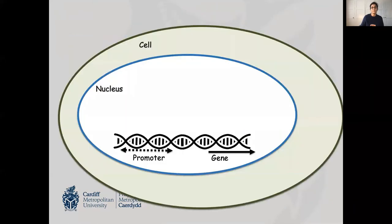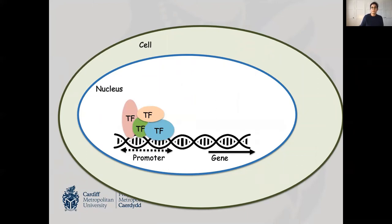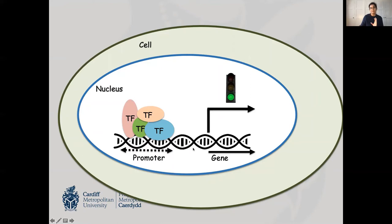When I talk about gene expression, what do I mean? This is our gene, shown with a solid arrow — this is where the information is to make protein. But to make protein, we also need a region of our genome called the promoter, which is generally quite close to where our genes are. On these promoters, certain proteins called transcription factors have to come and bind. These are not the same for all genes and could be different in different cell types. We need the right combination of transcription factors to come and bind to the promoter, and once the right proteins occupy the promoter, the gene expression will be switched on.